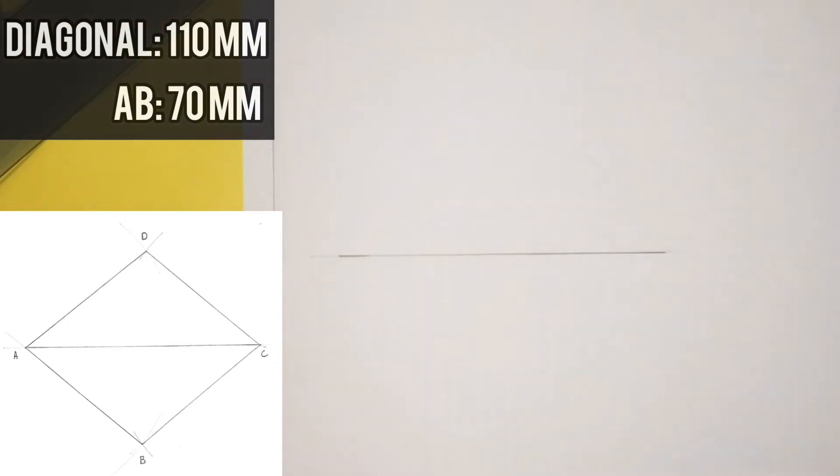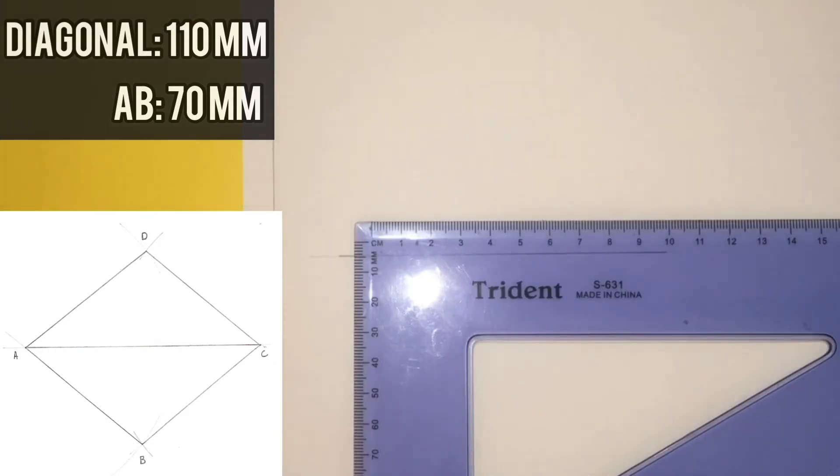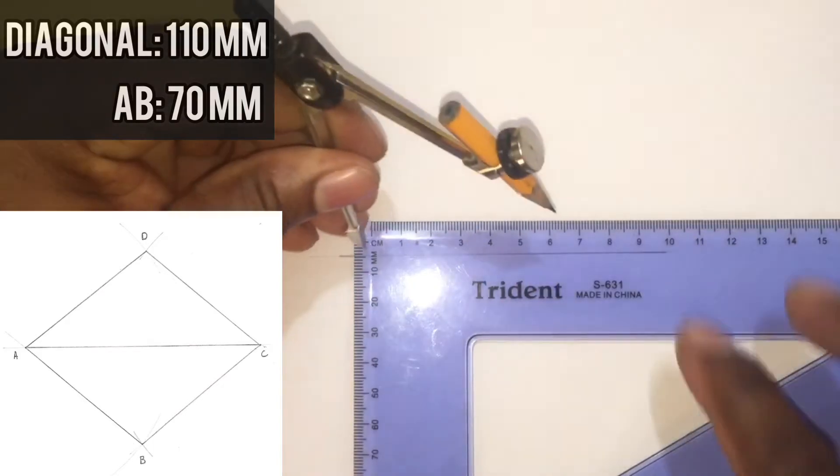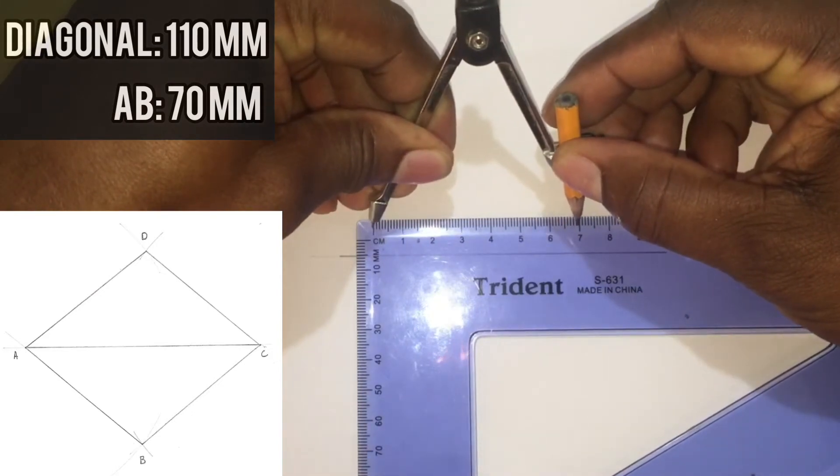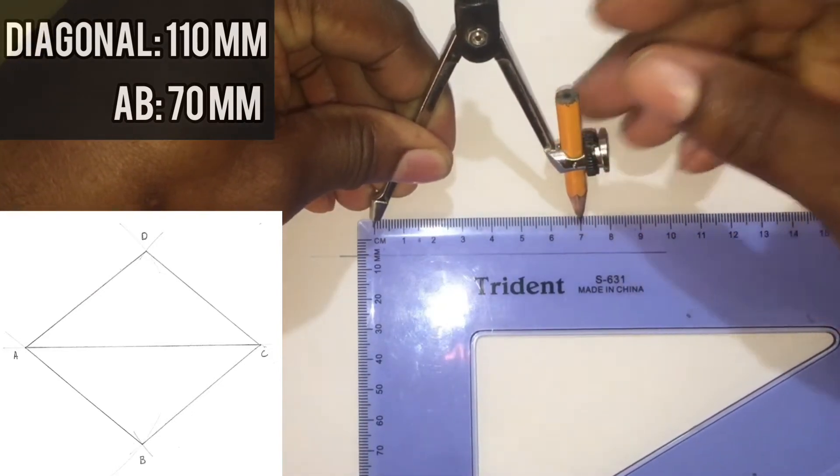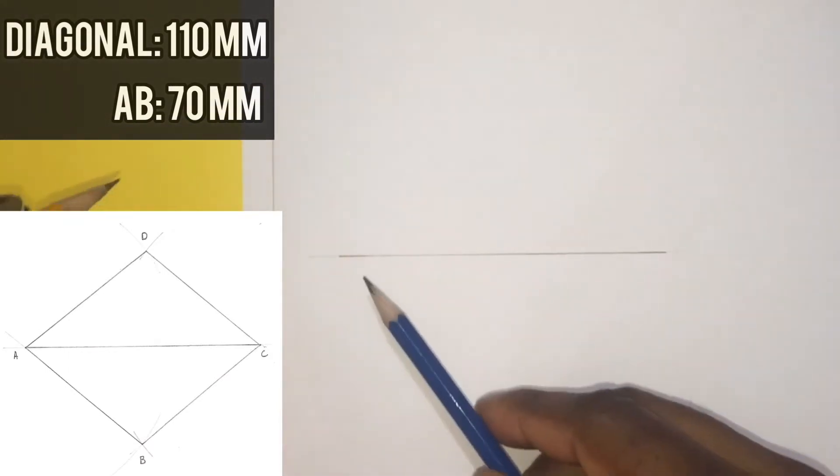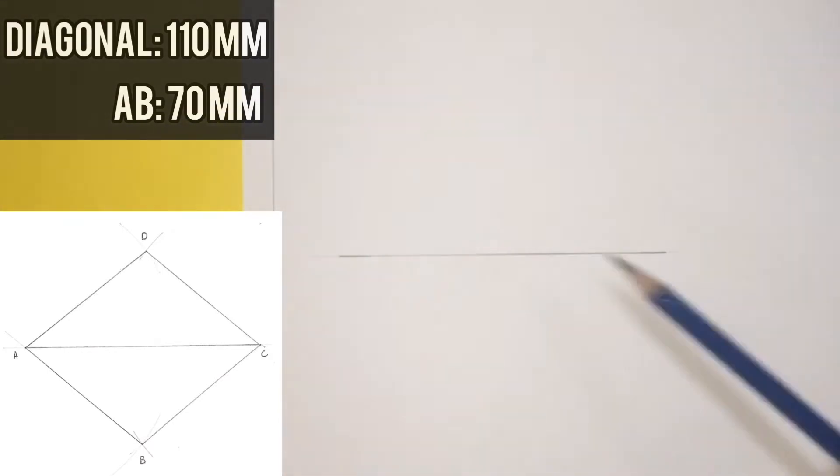The next step is to open your compass to a radius which is 70 millimeters. I will now put my compass at A and C.